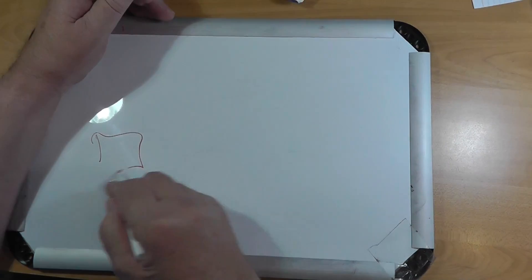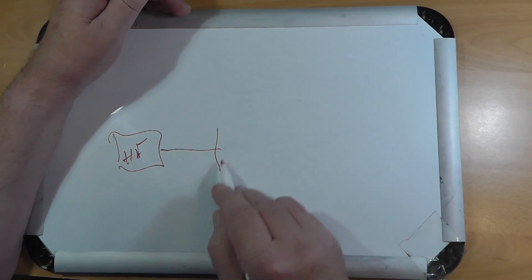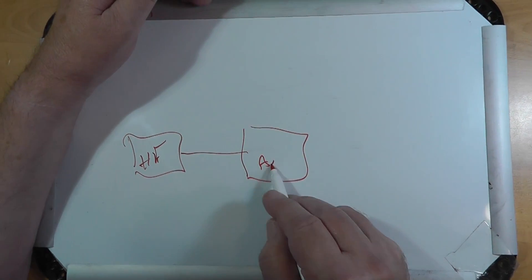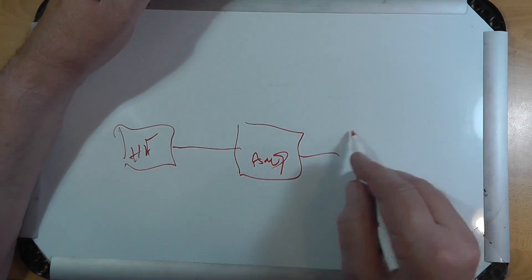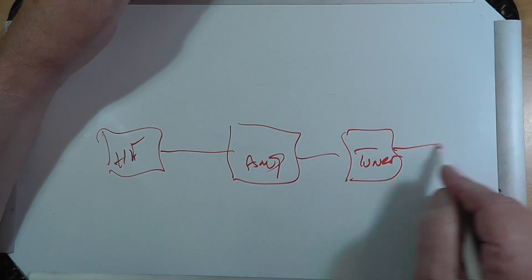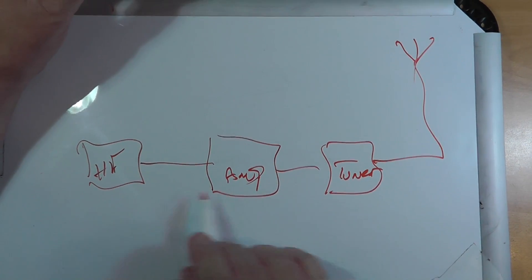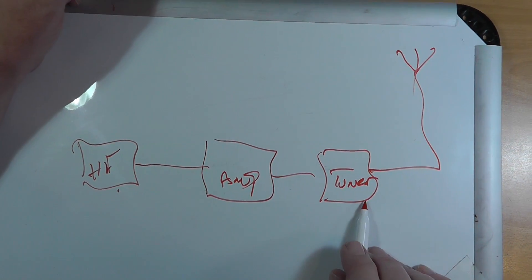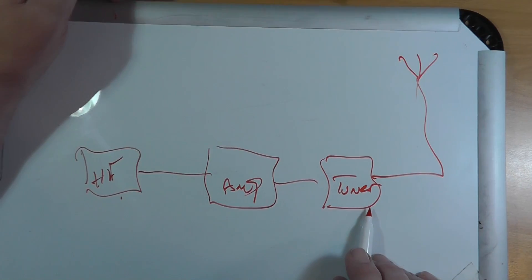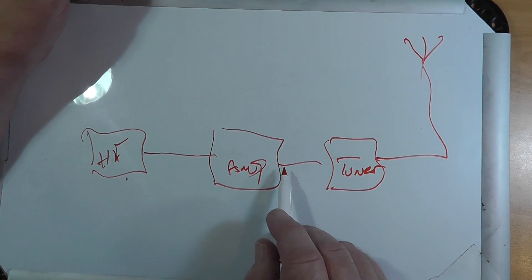Now, the problem that he has is it's just an amplifier. So he's got his HF radio, and he's got an amp, and he's got a tuner. Now, the problem is when he wants to use his radio without the amp, there isn't apparently a bypass input.